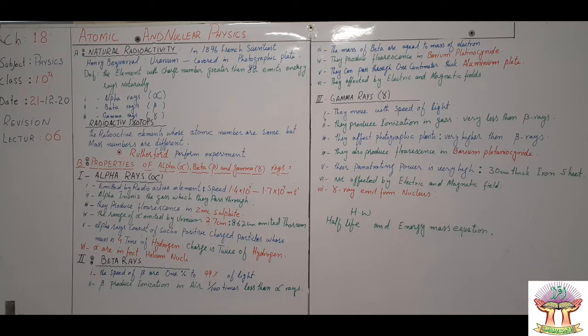Natural radioactivity is made by elements with charge number 82. Those elements which are more than 82 generate energy rays. These rays are called Alpha rays, Beta rays, and Gamma rays. Radioactive isotopes are elements whose number are same but mass number are different. When the mass number is different, we call them isotopes.